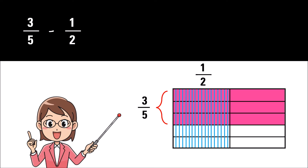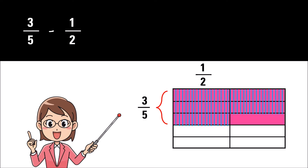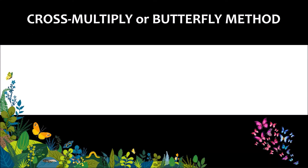Similarly, the fraction one-half, which is represented vertically, will have one column shaded out of two columns. We can represent the difference of both fractions using this image by moving the shaded portion onto the colored part. Now the boxes that are only filled with color pink represent the difference and will become the new numerator, and the total boxes will represent the new denominator. Thus the answer is one-tenth.